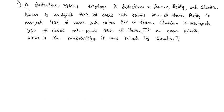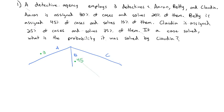We're going to set up a tree diagram to work out the idea behind Bayes' Theorem. The first branch represents what happens first — a case needs to be assigned to a detective. It could be assigned to Aaron, Betty, or Claudia. Aaron is assigned 30% of cases (0.3), Betty is assigned 45% (0.45), and Claudia is assigned 25% (0.25).